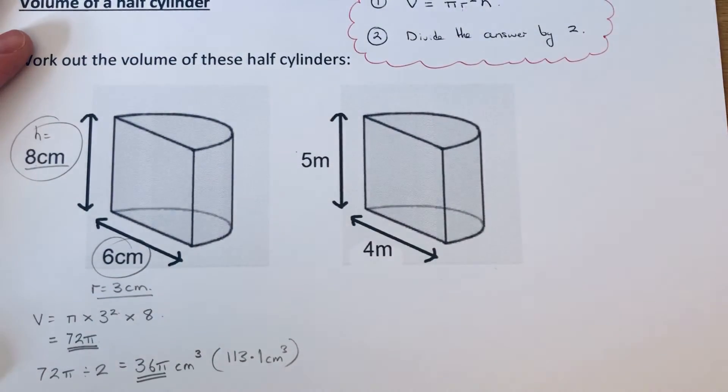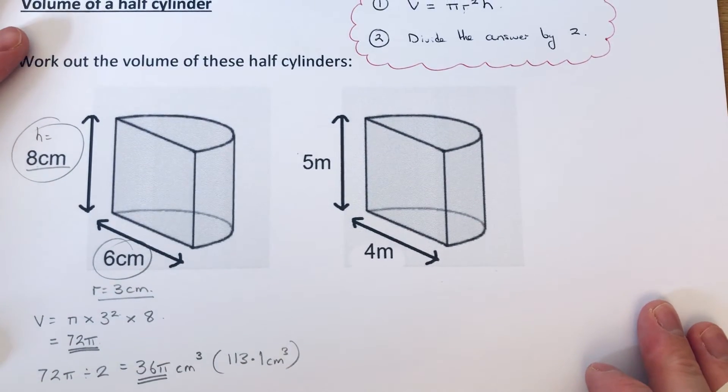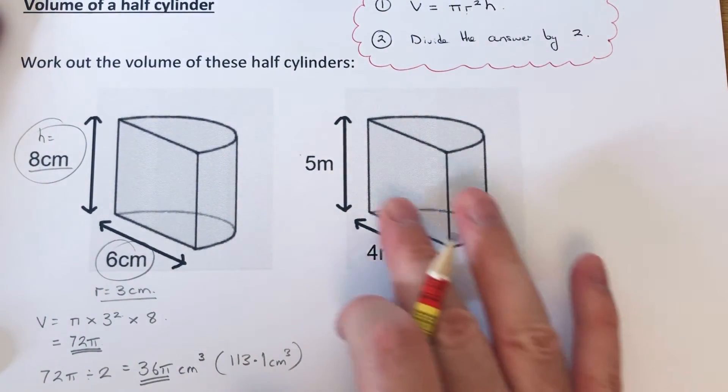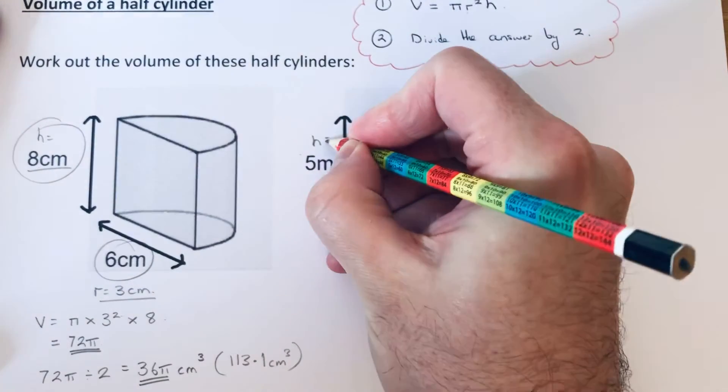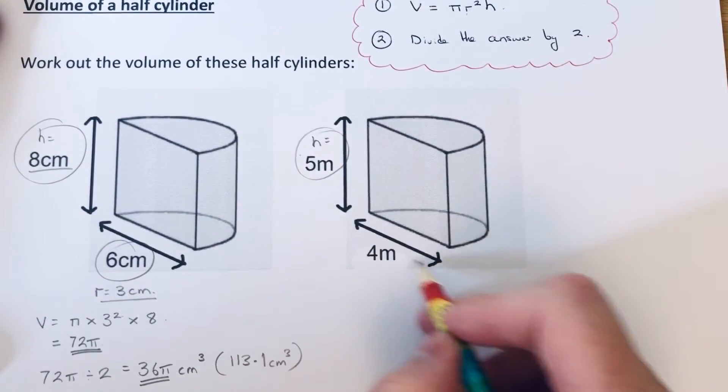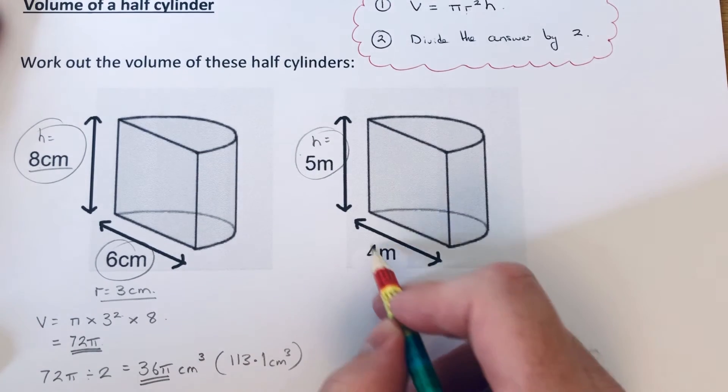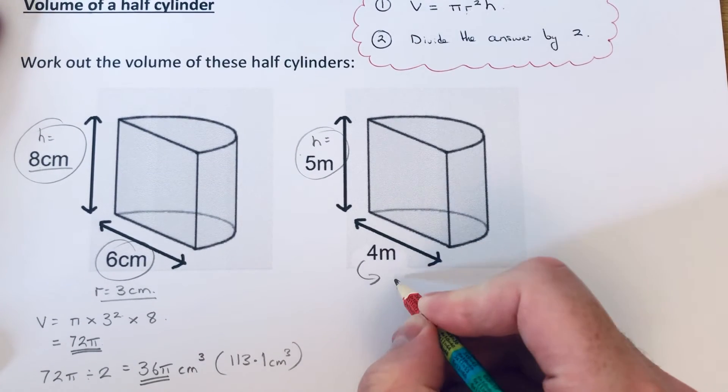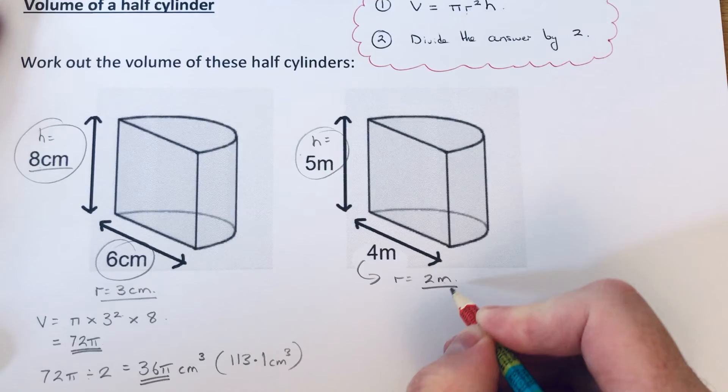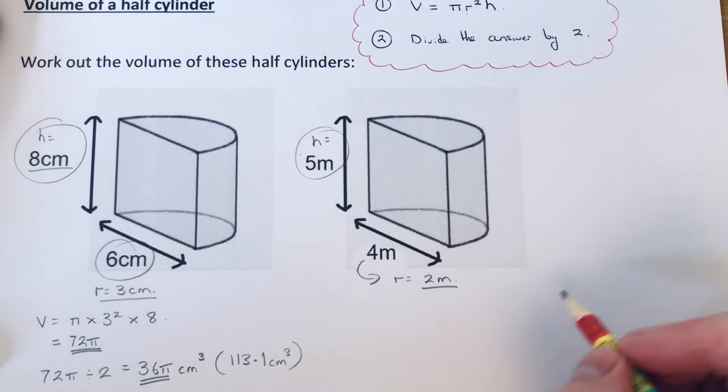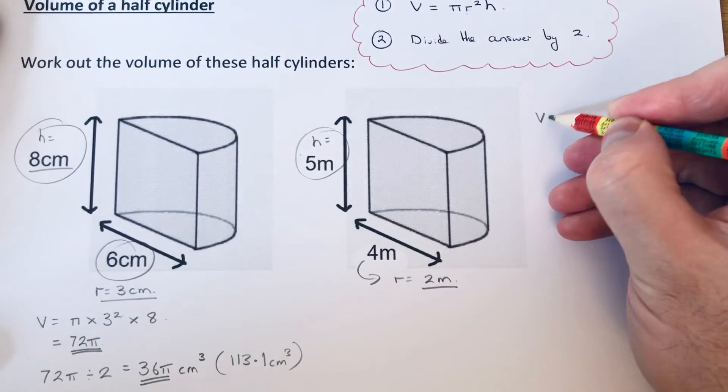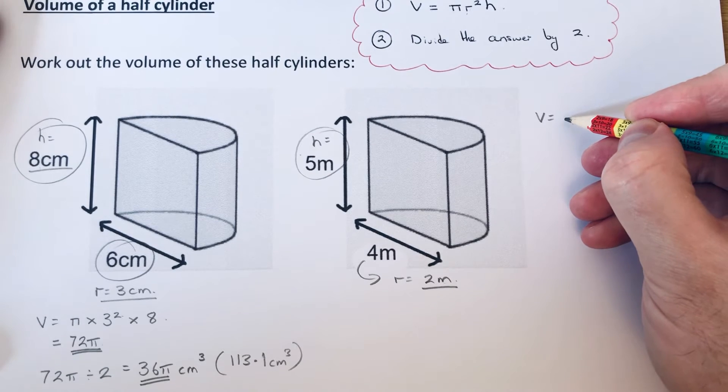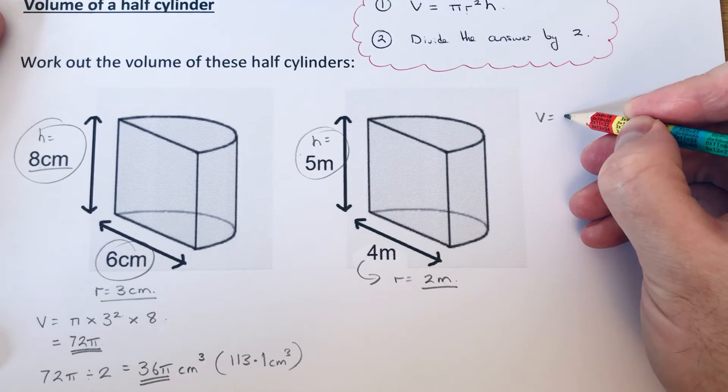Let's move on to our second example. This time our cylinder has a height of 5, and again we're given the diameter which is 4. We need to half this to give the radius which is 2 meters. Again, we substitute these into our formula.